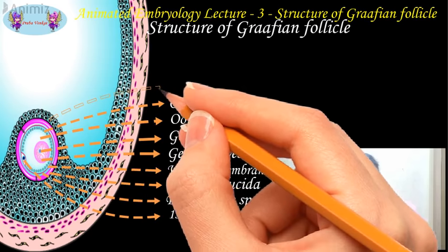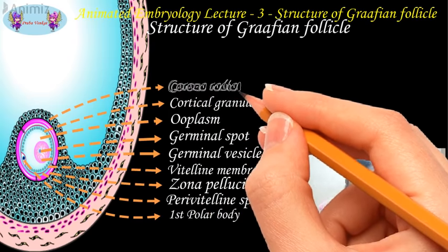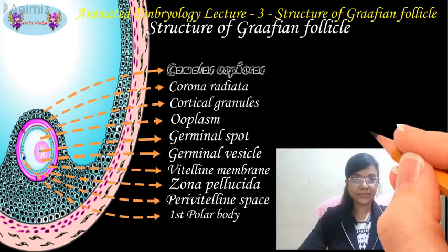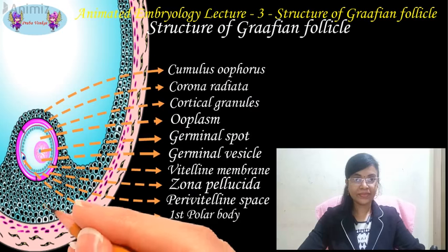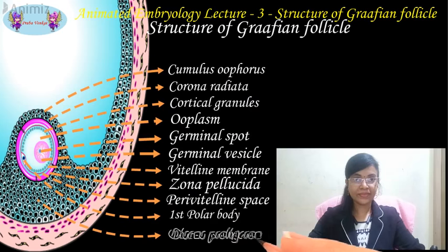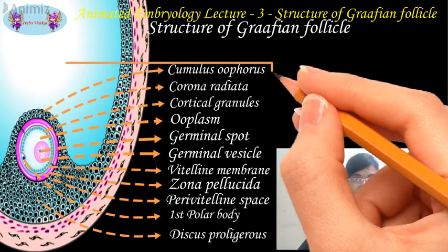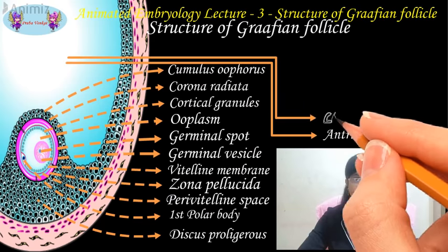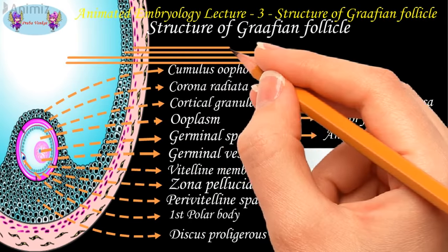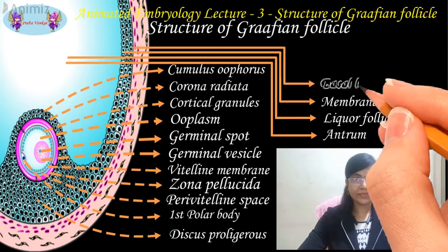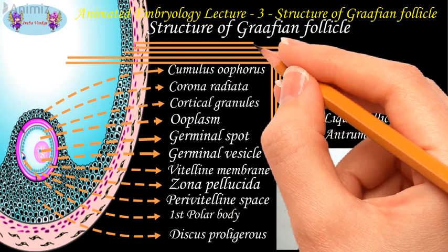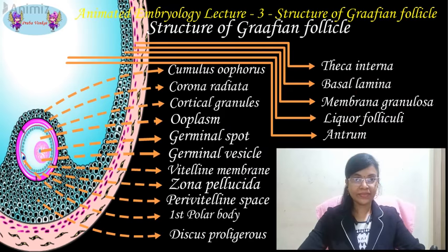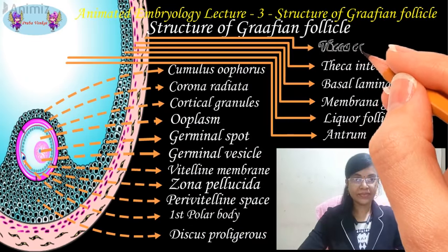The first layer of cells surrounding the zona pellucida is called the corona radiata. The mound of cells covering the oocyte is called the cumulus oophorus. The oocyte is connected with the follicular wall by the discus proligerus. The large fluid-filled cavity is called the antrum, and the fluid present inside is known as liquor folliculi. The cells of the membrana granulosa rest on the basal lamina. The inner secretory layer of the theca is called the theca interna, and the outer fibrous layer is called the theca externa.